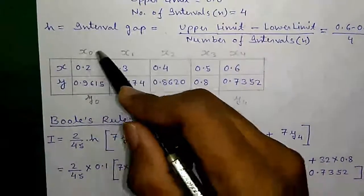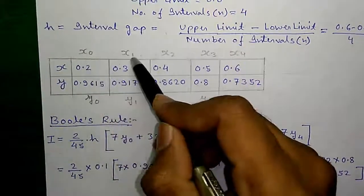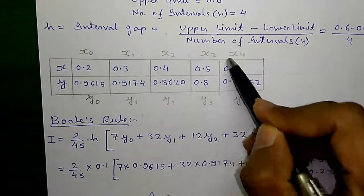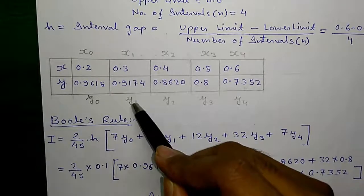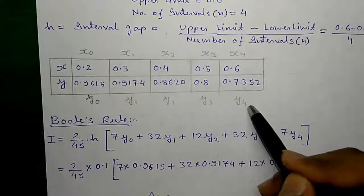Now, the first value of x is known as x0, next value x1, and so on up to x4. Similarly, first value of y is known as y0, next y1, and so on up to y4.